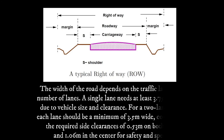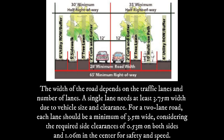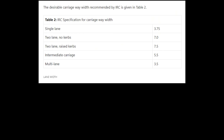Right of way, or land width, is the width of land acquired for the road along its alignment. It should be adequate to accommodate all the cross-sectional elements of the highway and may reasonably provide for future development.